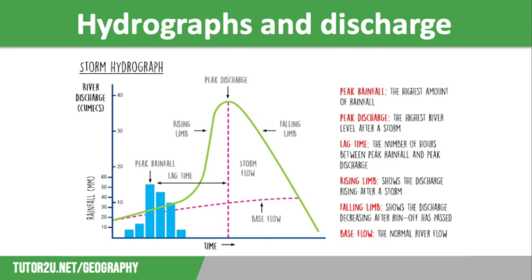During a storm, water reaches the river by surface runoff over impermeable surfaces, which causes river discharge to rise quickly — hence a steep rising limb. Once the surface runoff has stopped, the river discharge can start to fall. This decreases at a steady rate, which is why the falling limb is less steep. This is because the water reaching the river is mainly flowing as through flow — through the soil — which is slower than surface runoff.